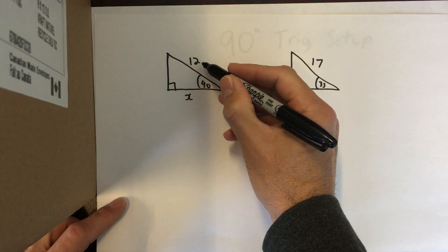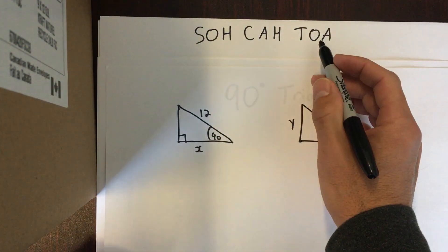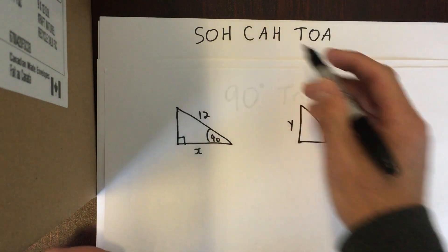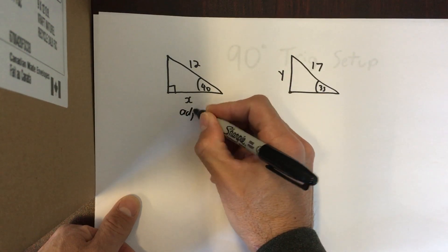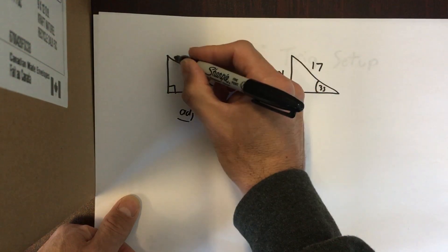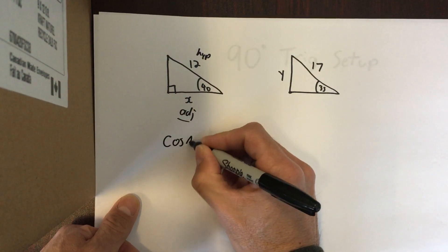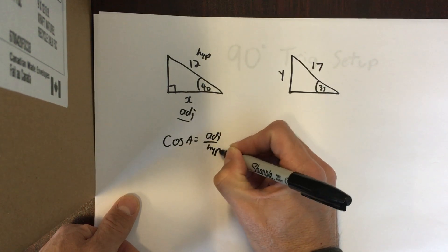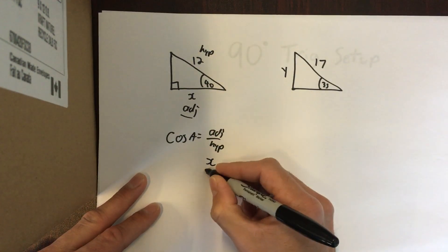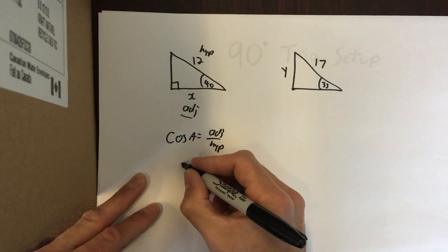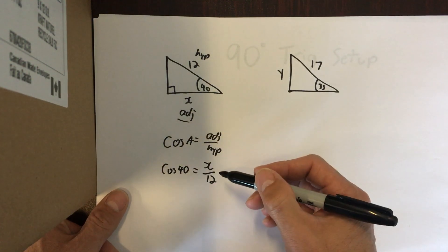In this first example, we know the hypotenuse and we're looking for the adjacent side. The only equation that involves hypotenuse and adjacent is cosine. I know this side is adjacent because it's beside the angle that's given. The long side across from 90 degrees is always the hypotenuse. Cosine of an angle is adjacent over hypotenuse, so for this triangle: adjacent is X, hypotenuse is 12, and the angle is 40 degrees.